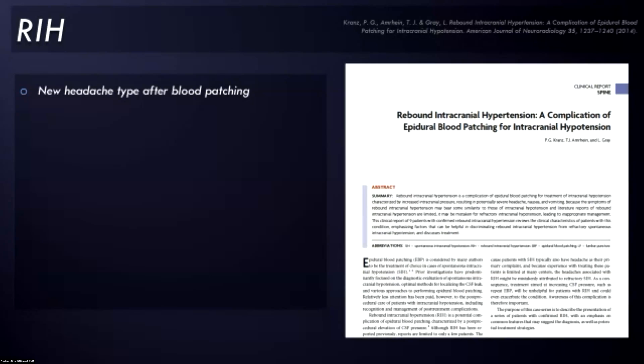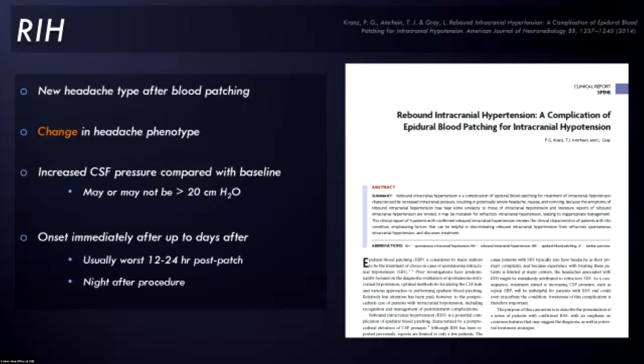Back in 2014, we collected a couple of these cases and described them in this AJNR article. Basically this rebound intracranial hypertension is characterized clinically by a new headache type that develops after blood patching. Notably, there's a change in the phenotype. Oftentimes the most reproducible thing is that it goes from being an orthostatic headache, a leak type headache to a non-orthostatic or a reverse orthostatic headache, which is worse when laying down. When you measure CSF pressure, which we don't always do, there's typically an increase compared with baseline, and sometimes that's greater than 20 centimeters of water, and sometimes it's not. So a single CSF pressure measurement without any context of what came before is not particularly helpful in either making or excluding this diagnosis.